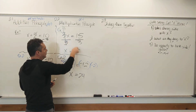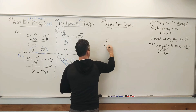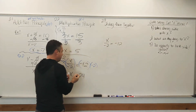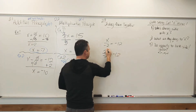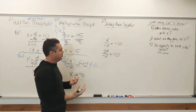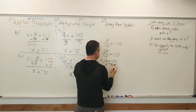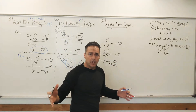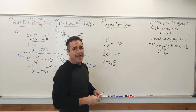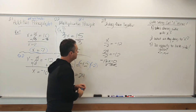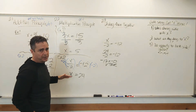Let's check the answer for x over negative 2 equals negative 12. We're going to take positive 24 and plug it in for x. So we've got 24 over negative 2. 24 divided by negative 2 does make negative 12. Negative 12 equals negative 12. Check. That's all of section 2.1 — the addition principle — and all of section 2.2 — the multiplication principle.